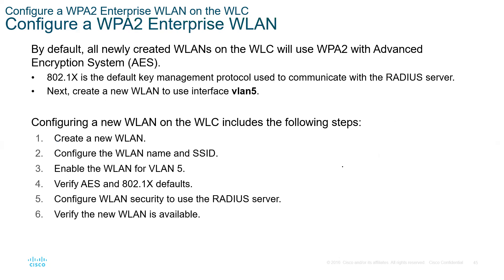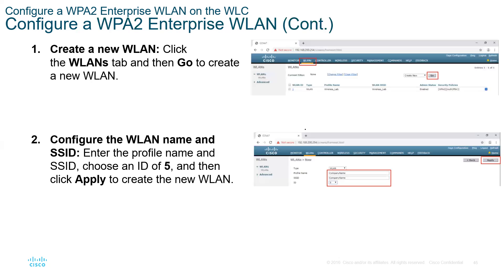Configuring enterprise wireless LANs. By default, newly created LANs on the controller use WPA2 with 802.1X as the default key management protocol. We have already created a new wireless LAN. We now want to see how to configure WPA2 enterprise and the security protocols that go with it.